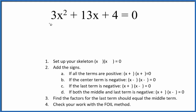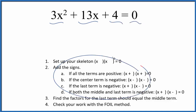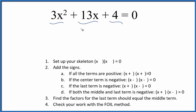Let's factor the equation 3x squared plus 13x plus 4 equals 0 and we'll use these rules to help us. This particular equation looks a little bit daunting, but if we approach it systematically we should be okay.